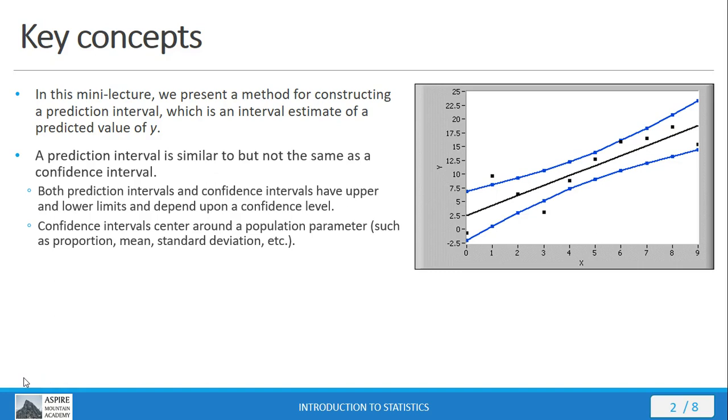A confidence interval is going to center around a population parameter. Remember before we were making confidence intervals on proportions or means or standard deviations. We've got one parameter that's describing some aspect of an entire population and we're centering the interval around that. That's a confidence interval. Prediction intervals, on the other hand, are going to center around a single data point in the population. Rather than centering ourselves around some parameter that's describing a quality of the entire population, now we're going to center the interval around a single member of the population. That's a prediction interval.